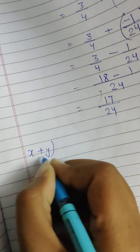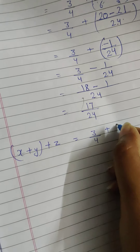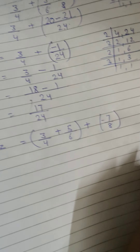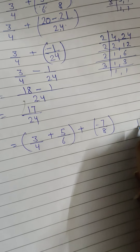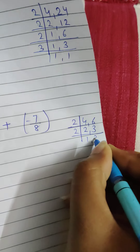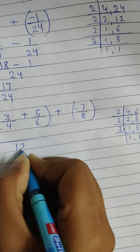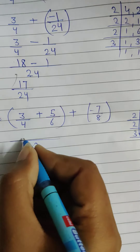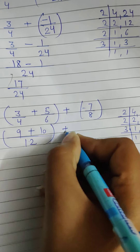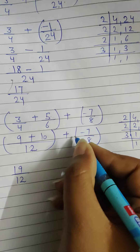Now for the right hand side, we have (x plus y) plus z. We put values in the bracket: three by four plus five by six, then plus minus seven by eight. Solving the bracket first, we find the LCM of four and six, which is twelve. Four table twelve is three, so three times three is nine. Six table twelve is two, so two times five is ten. Nine plus ten equals nineteen by twelve.